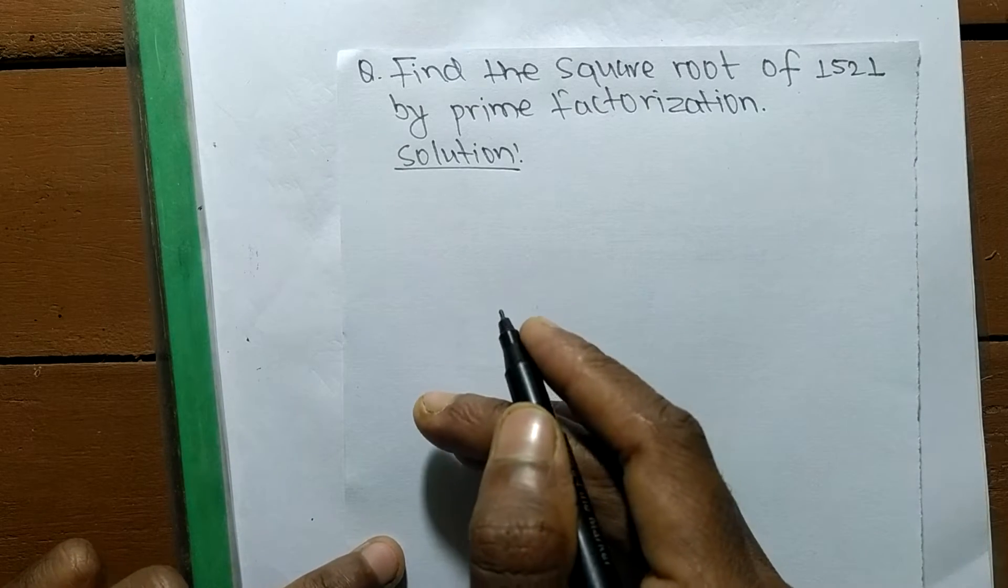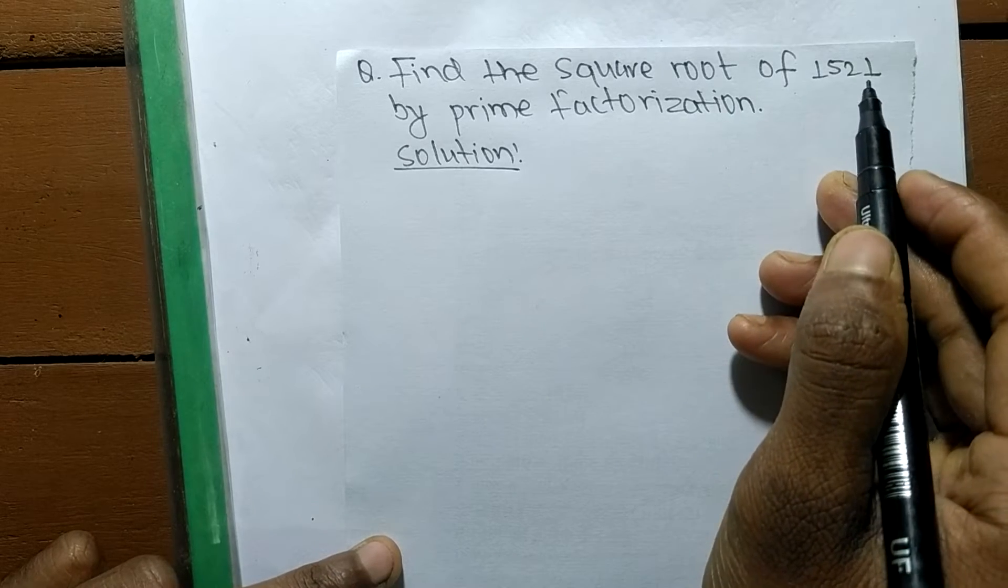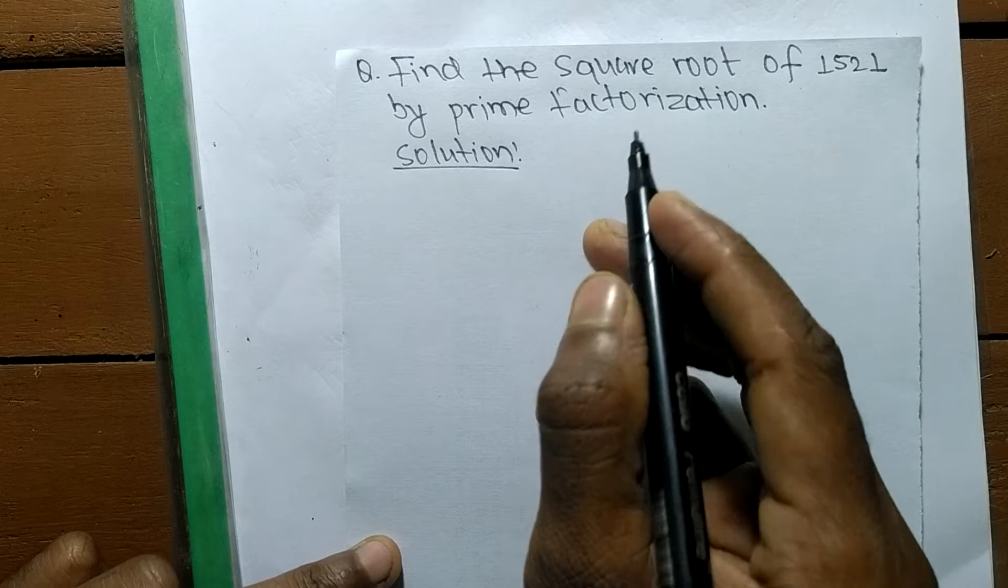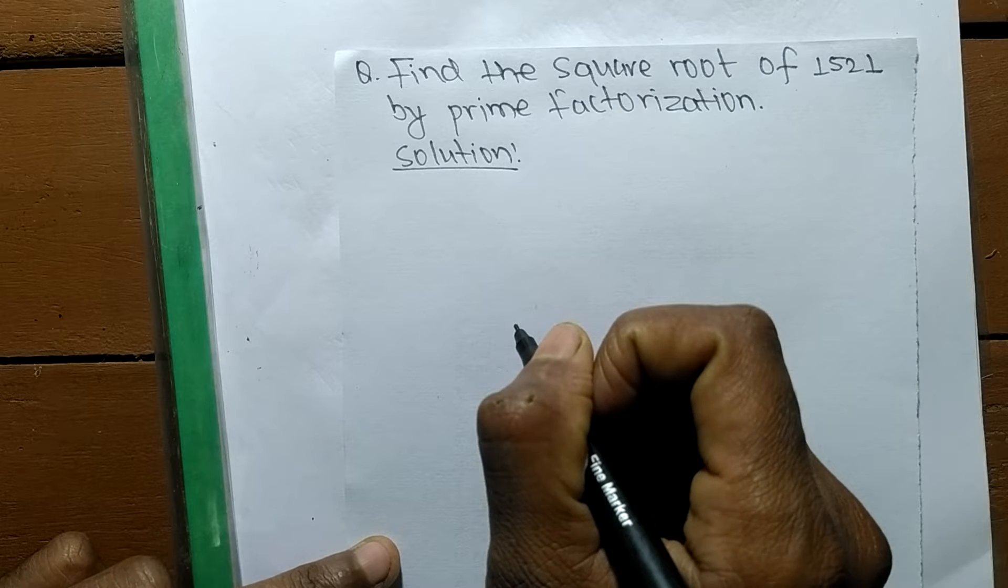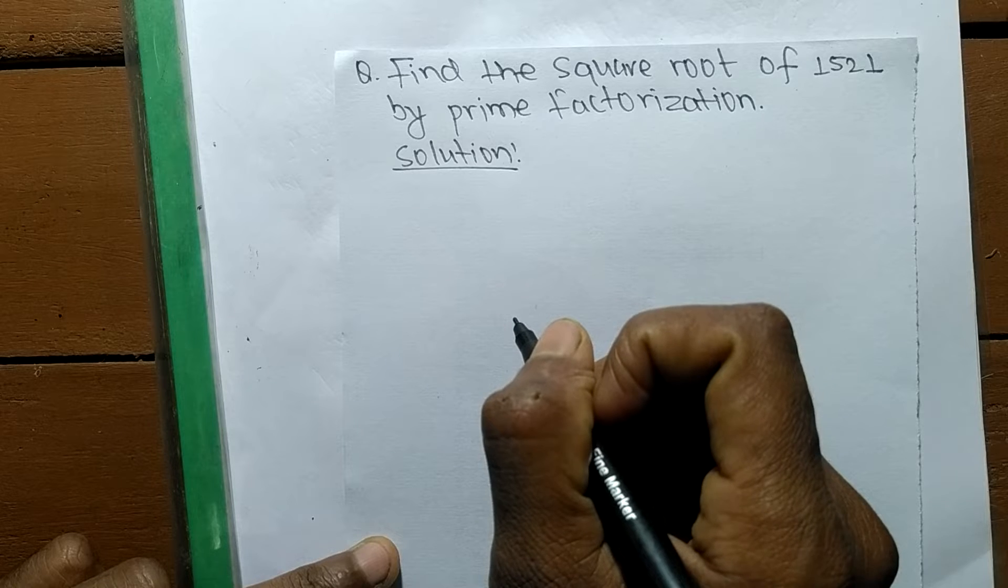So today in this video we shall learn to find the square root of 1521 by prime factorization method. To find out a square root by prime factorization method, first of all we have to find out the prime factors of the given number.